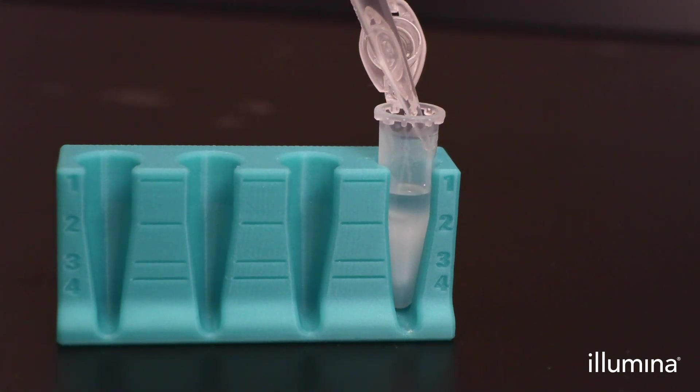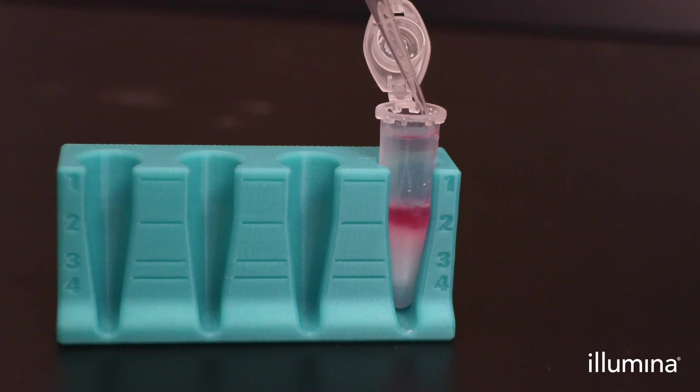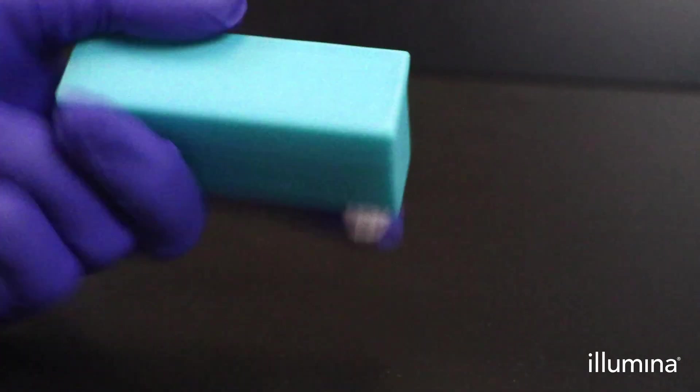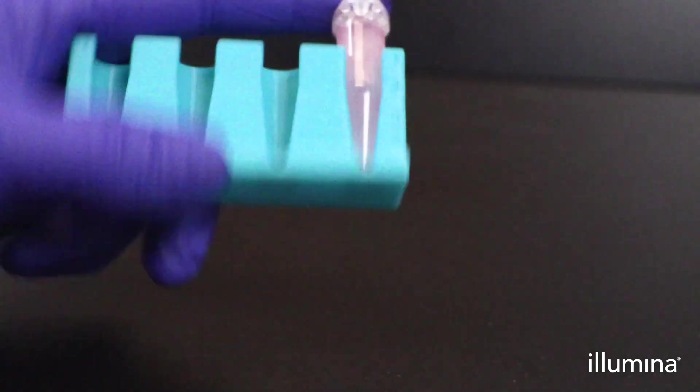Next, we will add 750 microliters of breaking buffer down the sidewall, followed by an additional 200 microliters of the pink departitioning reagent added in the same fashion. We will then invert the sample 10 times to break our emulsions.